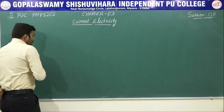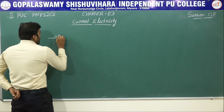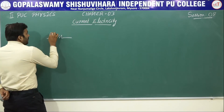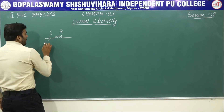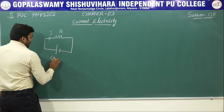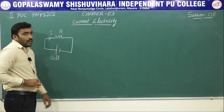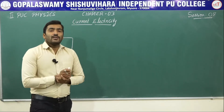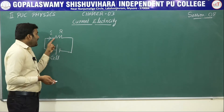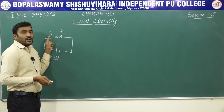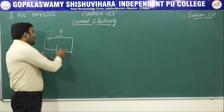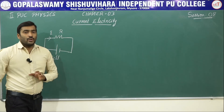First, if you consider any resistor or conductor, in order to make the current flow through it, what we need is a device called a cell or a battery. This is a cell. A combination of two or more cells is called a battery. The cell is a device which maintains a constant potential difference across the ends of a conductor so that a current I flows through the circuit.